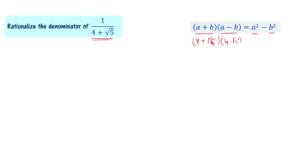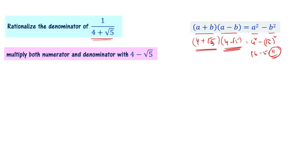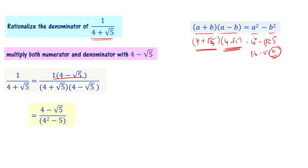In this formula, A is 4 and B is root 5, so A minus B becomes 4 minus root 5. That gives 4 squared minus root 5 whole squared, which equals 16 minus 5, equal to 11. So we multiply both numerator and denominator by (4 minus root 5). The numerator becomes 4 minus root 5, and the denominator becomes 4 squared minus 5, that is 16 minus 5 equals 11. So the result is (4 minus root 5) divided by 11.